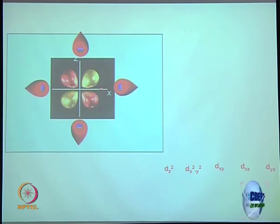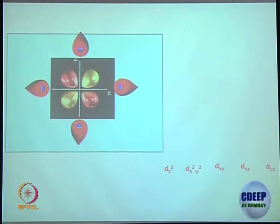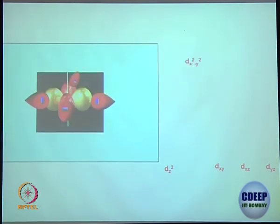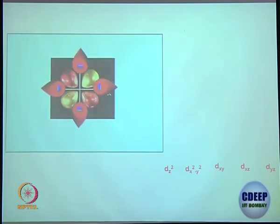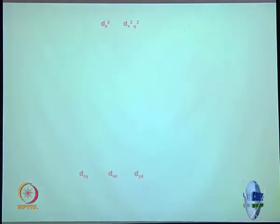If you look at the dxz orbital — along x and z axes — the ligands are approaching from the middle, not directly toward these lobes. So their energy will not be net destabilized; comparatively they are going to be stabilized. Similarly, dxy and dyz are not in head-on collision with the ligands. Overall, it splits into two groups: two orbitals getting destabilized, three orbitals getting stabilized.